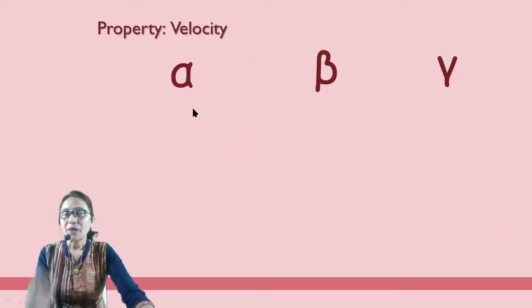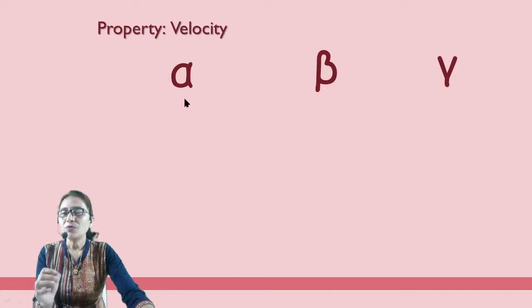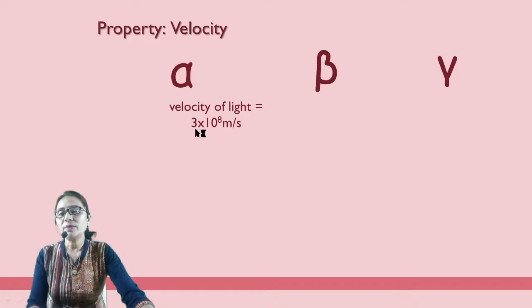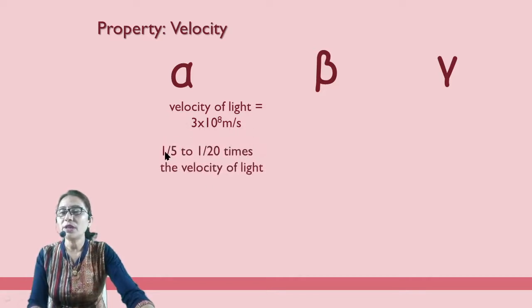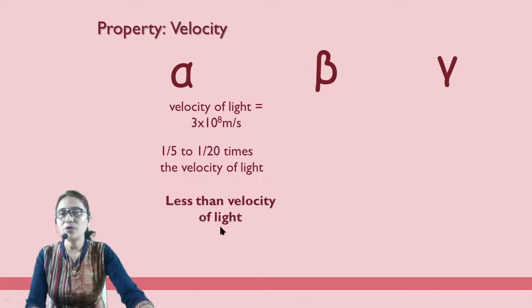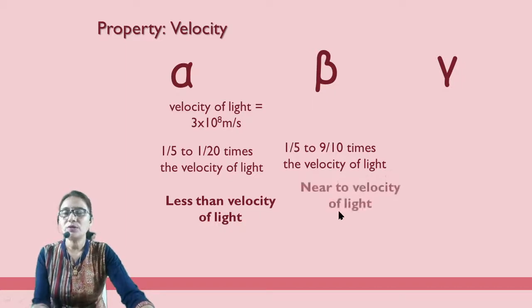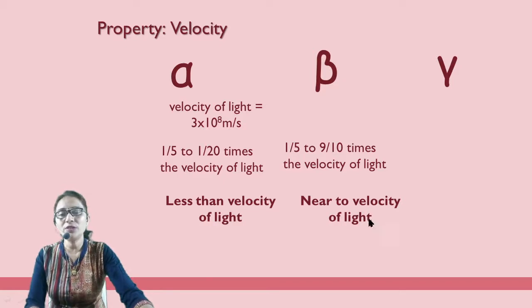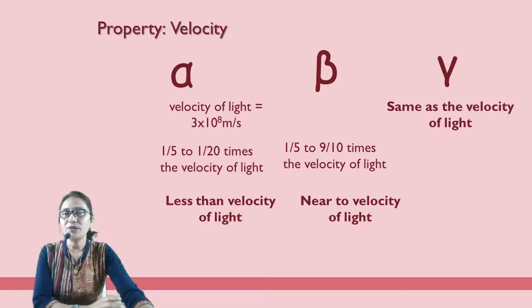Next property is velocity. We know the velocity of light is 3 × 10⁸ meters per second. The velocity of alpha particle is less than that of light. Beta particle moves near to the velocity of light — not the same, but close. Gamma radiation travels at the same velocity as light.